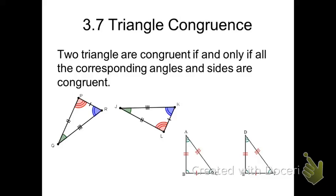Now, if you're paying attention, that's six things that I would have to point out in one triangle that are congruent to six things in another triangle. So the whole idea of these shortcuts is to try to maybe only show that three sides of one triangle are congruent to three sides of another triangle, and hopefully that will be enough information to show that the two triangles are congruent.